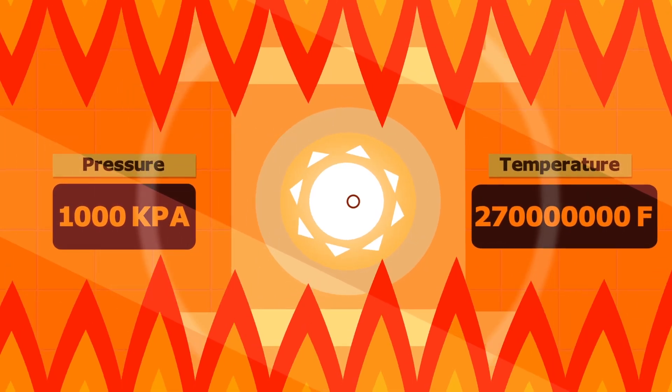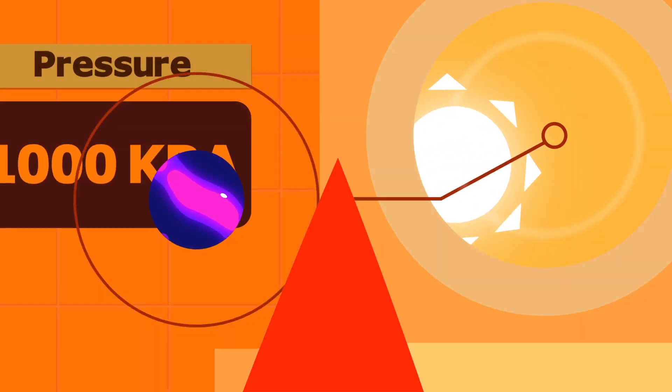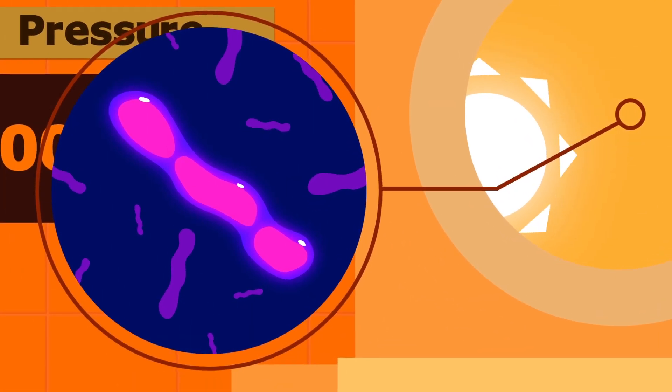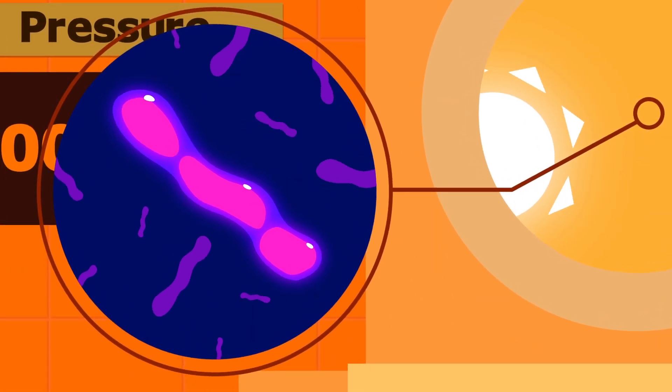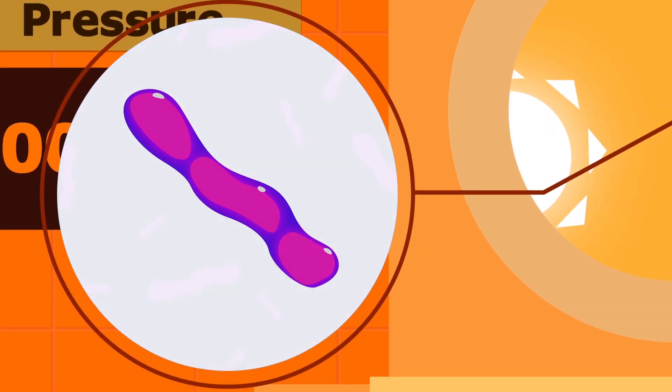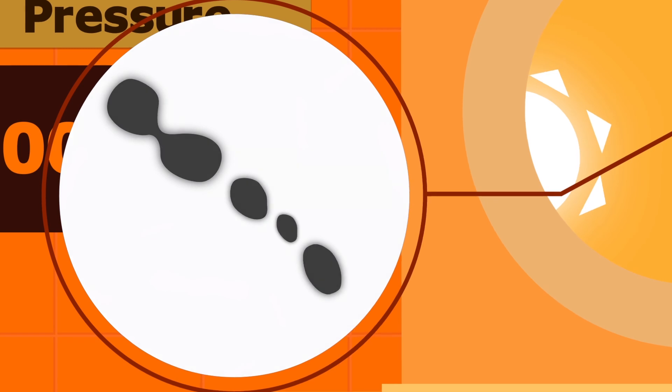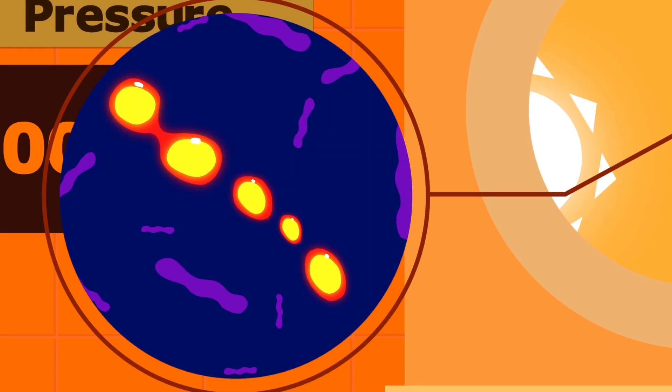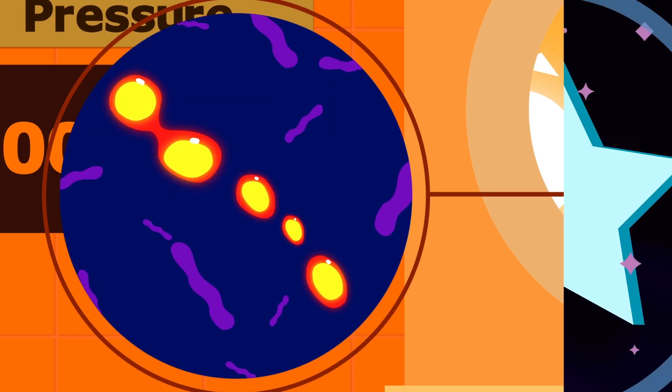The fusing of atomic nuclei produces plasma, which is the state of matter. To harness the energy, the plasma must be suspended inside a reactor. But like on the sun, the plasma is prone to produce bursts. If this happens and the plasma touches the reactor wall, it can easily damage it.